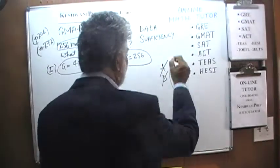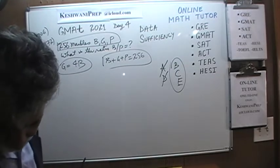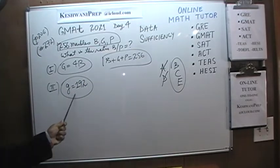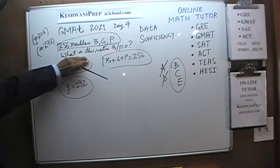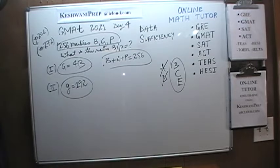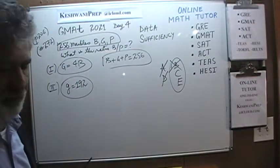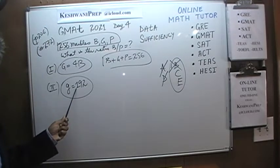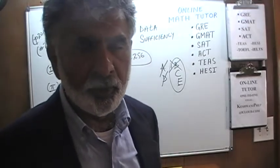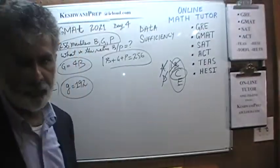The answer must be B, C, or E. The second statement tells us the number of green marbles is 192. Again, looking at the second statement alone, we have the same situation: two equations, three unknowns — we cannot solve it. The second statement by itself is also not sufficient. But if we put the two statements together, we now have three independent equations and three unknowns — no problem at all. Two statements together are enough to answer the question.